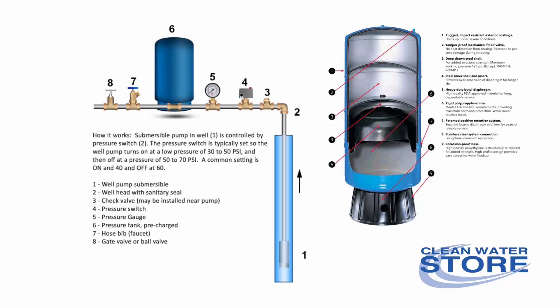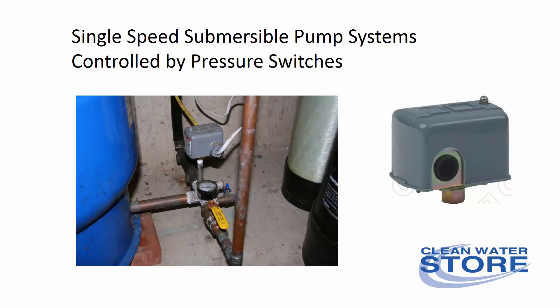Here's how a typical well pump is set up. You have a pressure switch that turns on and off the well pump. The pressure switch typically turns on at a lower pressure of 30 to 50 psi, and then off at a higher pressure of 50 to 70 psi. This is called the cut-in and cut-out. We're going to be covering how to check your well water flow rate for a standard single-speed pump controlled by a pressure switch. This is still the most common type of system out there.